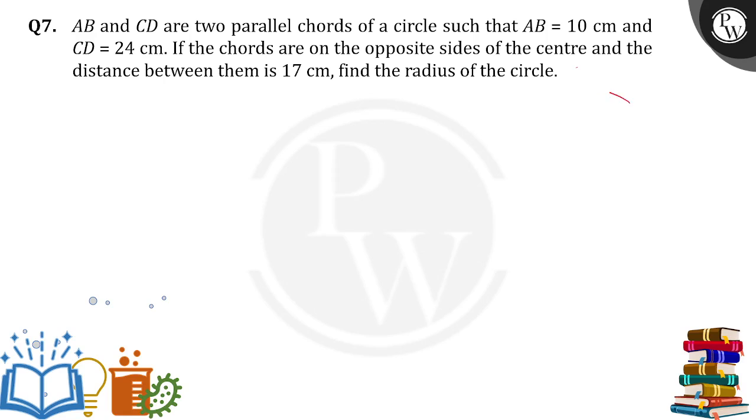I will look into this question. It was given that there is a circle with center O, and there are two chords. AB is one chord which measures 10 cm and CD is another chord which measures 24 cm. The distance between them, let's suppose PQ is the distance between them, the total distance is 17 cm. Now we need to find the radius of the circle, either OC or OA.